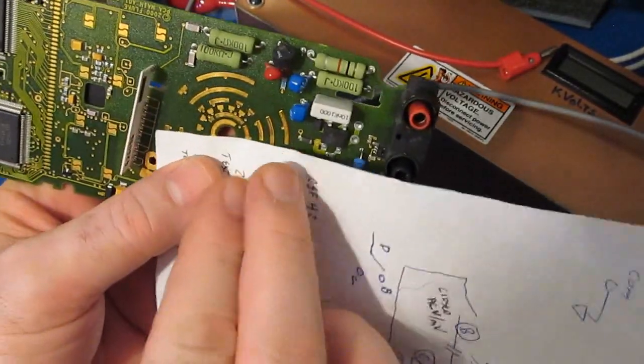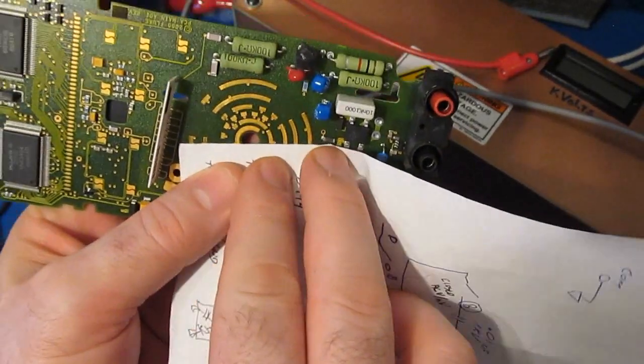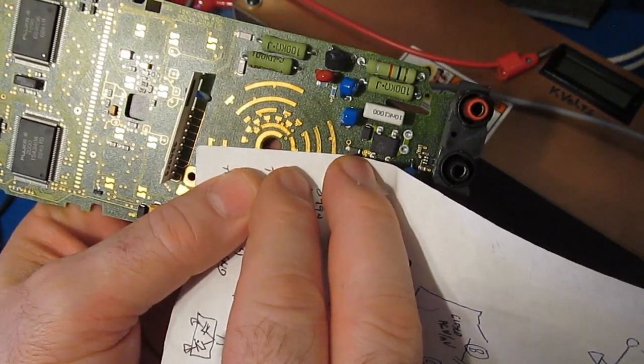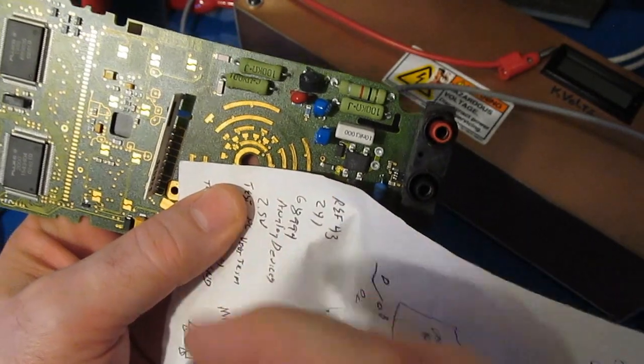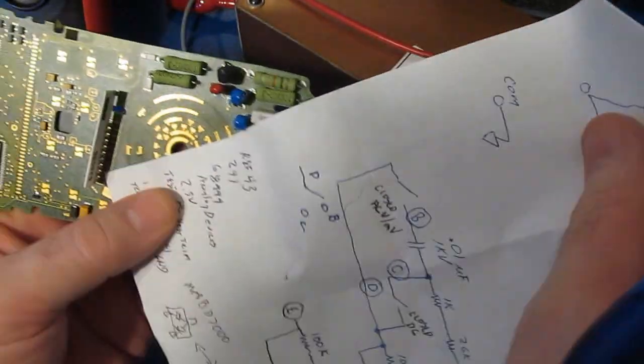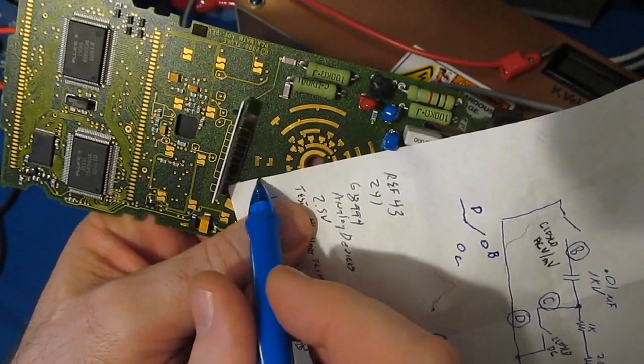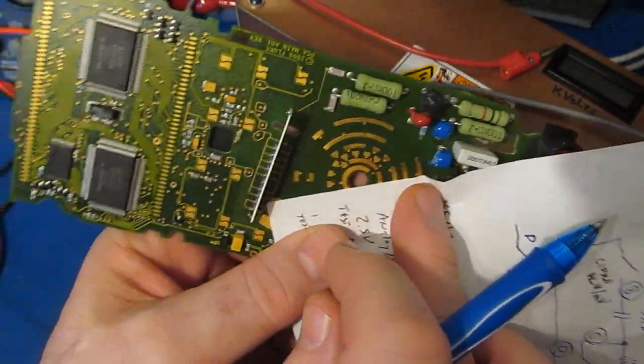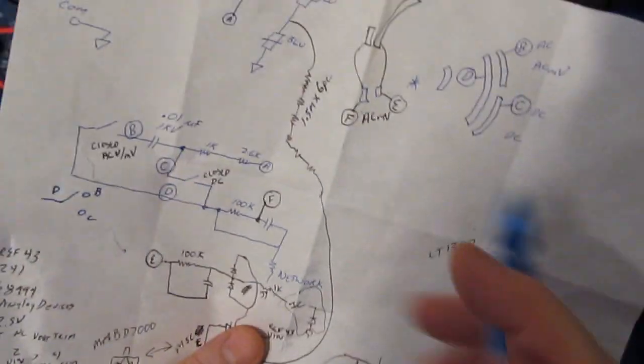When the meter is set to its millivolt AC mode, the contacts go across like this and it closes these two switch contacts. When it's in the AC volt mode, those two contacts are open like this. Hopefully it shows up.